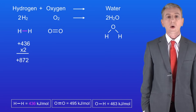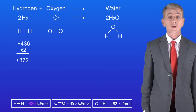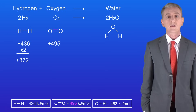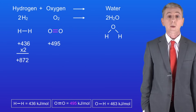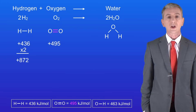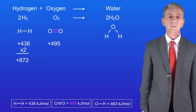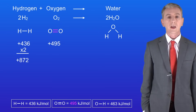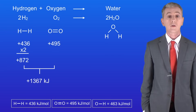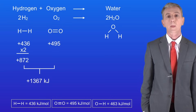The energy required to break the oxygen double bond is 495 kilojoules per mole, and the plus sign shows that we're putting energy in. Adding these values together gives us a total energy input of plus 1367 kilojoules.